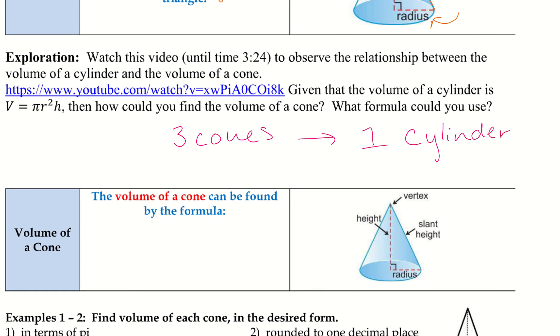So, by that logic, we can say that a volume of the cone is one-third of the volume, so one-third volume of a cylinder. So, we will have one-third times pi r squared h.